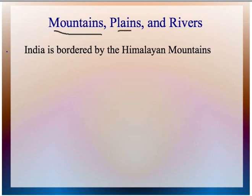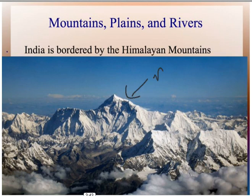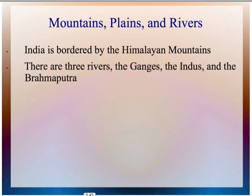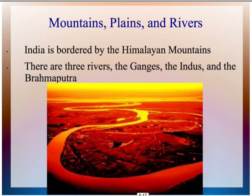India is home to mountains, plains, and rivers, and is bordered by the Himalayan mountains — yes, that is Mount Everest. For rivers, there are the Ganges, the Indus, and the Brahmaputra. This is an image of the Ganges River, which is said to have healing powers and is very important in India. It is also the largest river delta in the world.